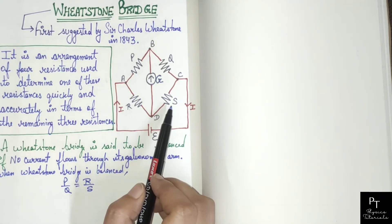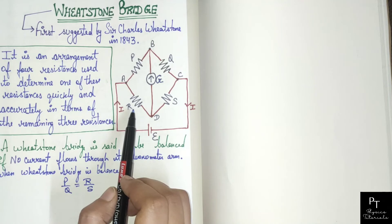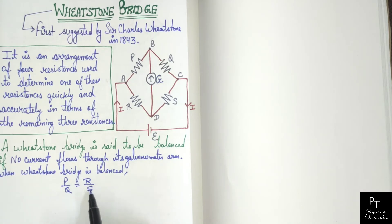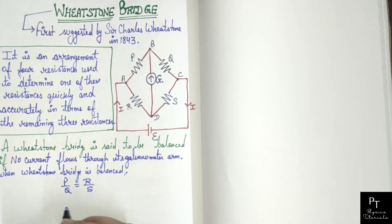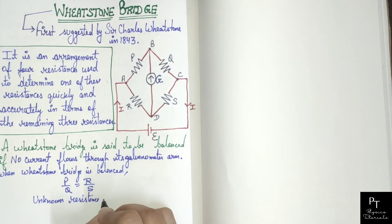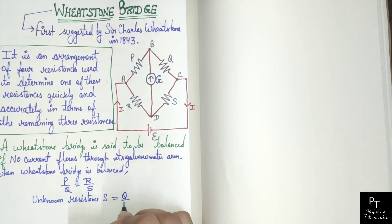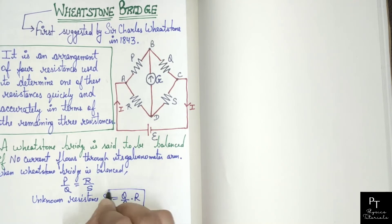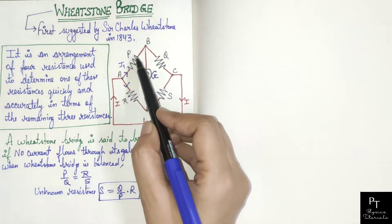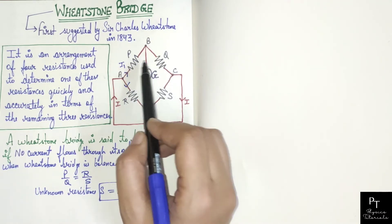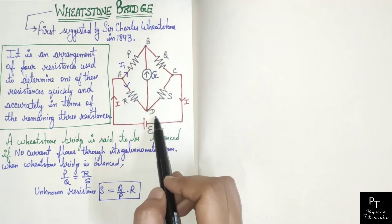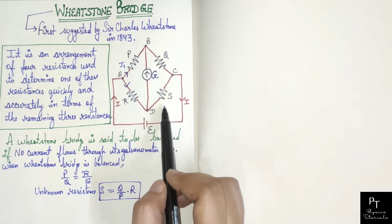Let S be the unknown resistance we have to measure. Resistance R is adjusted so that there is no deflection in the Galvanometer. Hence we get P/Q ratio equals R/S ratio, where the unknown resistance is S. Therefore S equals Q upon P multiplied by R. We can find the unknown resistance in terms of the remaining 3 resistances. The arms containing resistances P and Q are called ratio arms, the arm AD containing resistance R is called the standard arm, and the arm CD containing the unknown resistance is called the unknown arm.